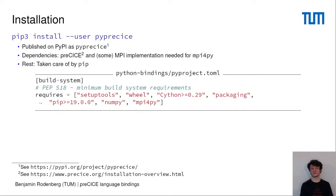Besides those dependencies, all others are installed by pip. You can see this in PyProject.toml, which is a Python-specific format for defining dependencies. There are some more dependencies like setuptools and Cython, which is needed to build the Python bindings. But you don't have to worry about these requirements since they are taken care of by pip.